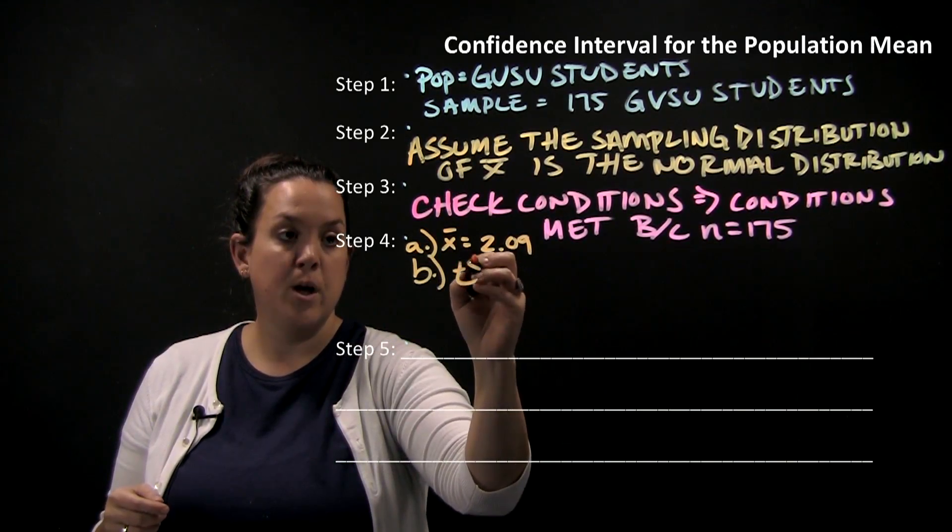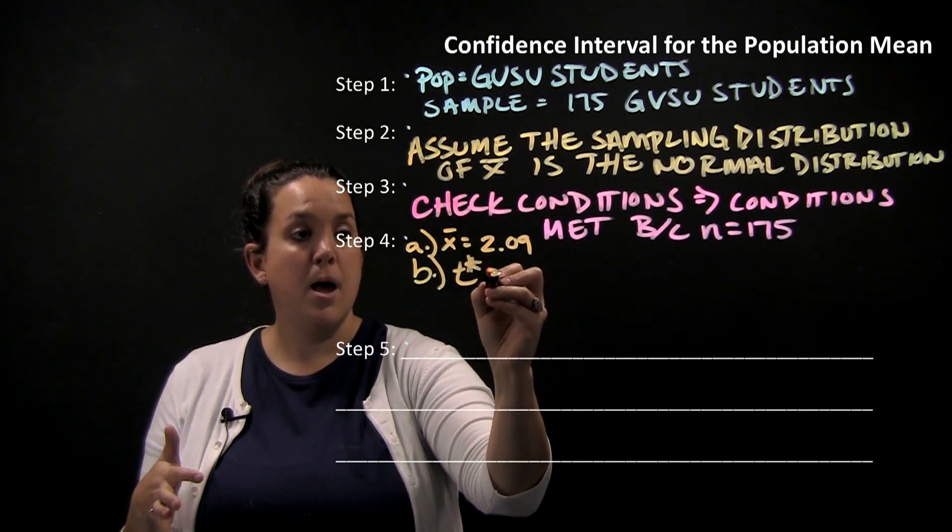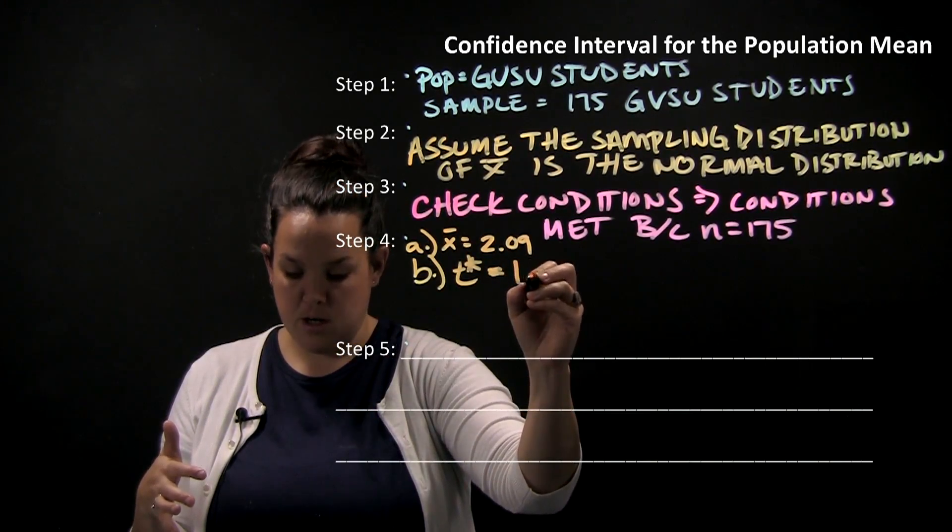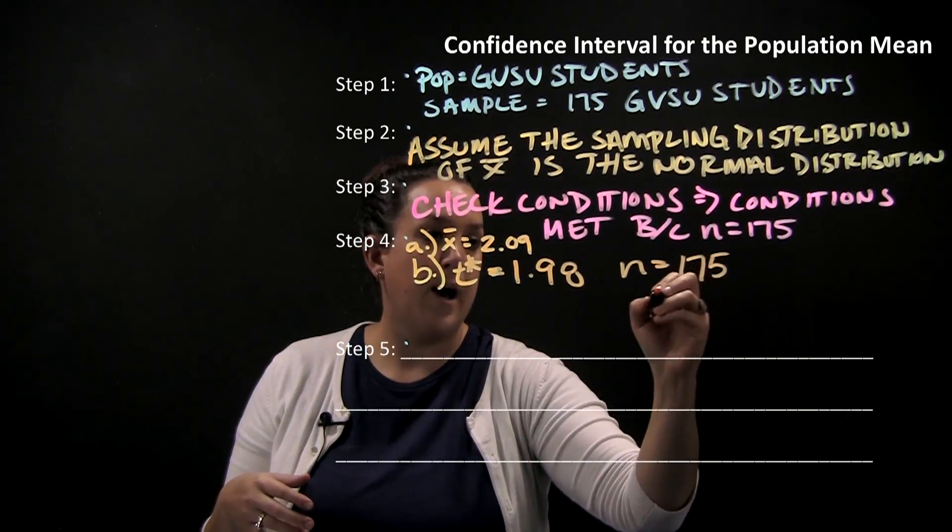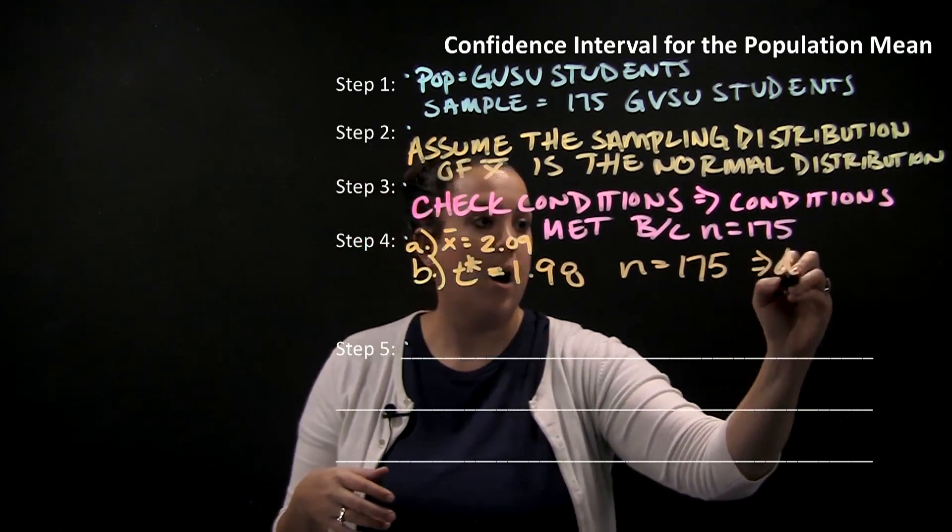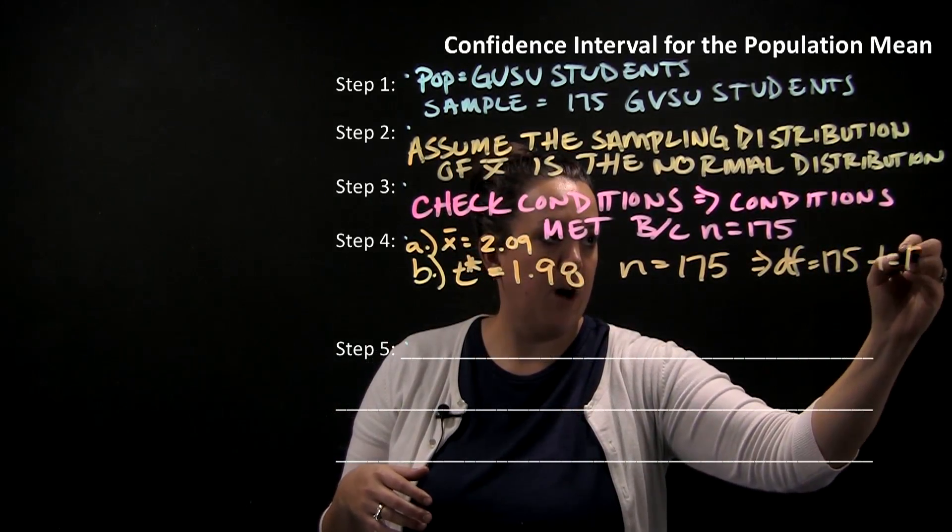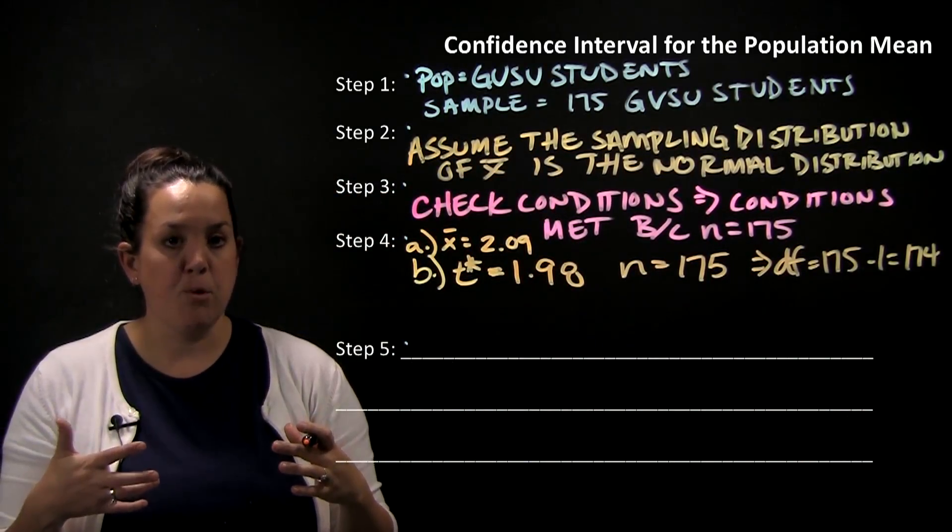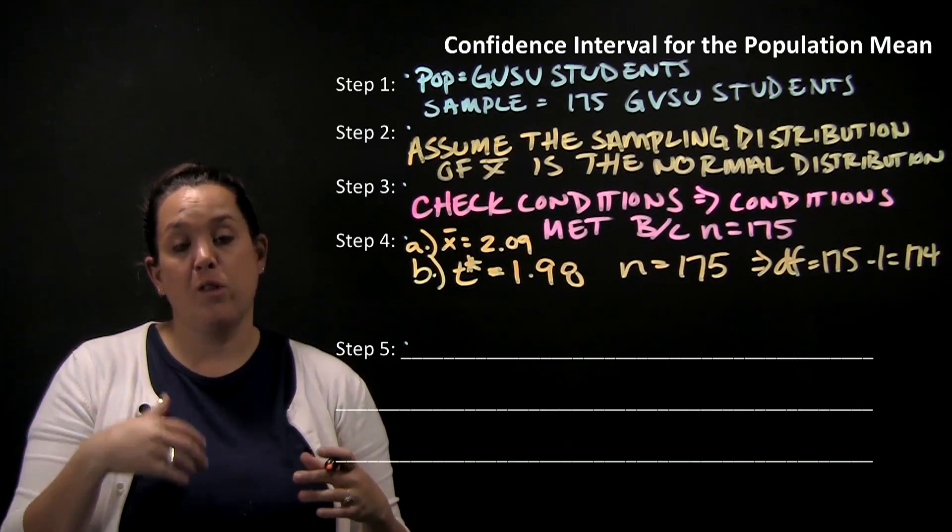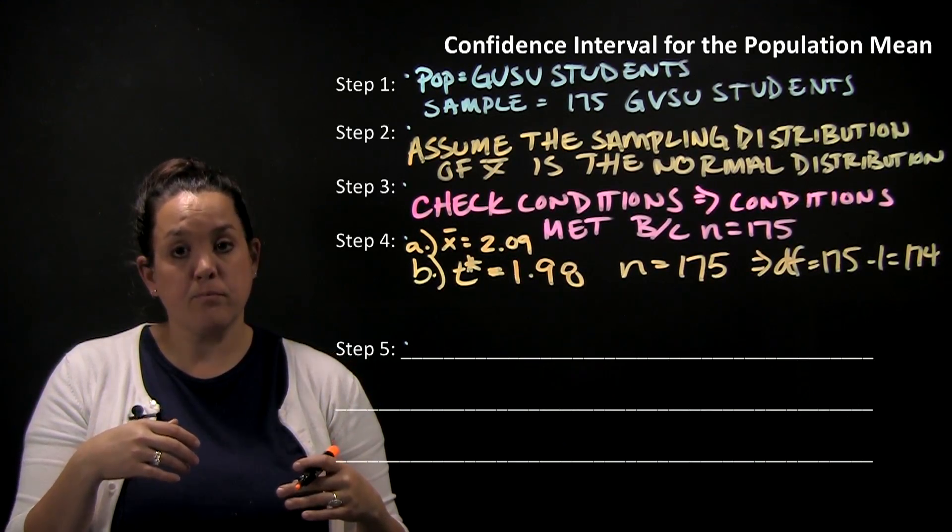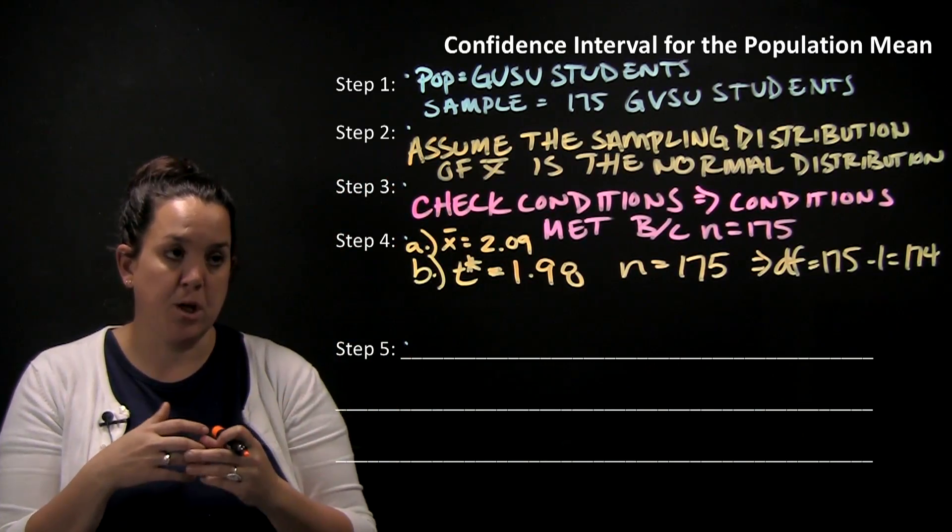Next we have our calculation of the T star multiplier. Remember you'll be looking up on that T distribution table. Based on n equal to 175, we would have 174 degrees of freedom. With 174 degrees of freedom, because the table only goes to 100 and then jumps down to 1000, you would use the 100 degree of freedom line, and then we want it to be 95% confident so we would use that particular column.